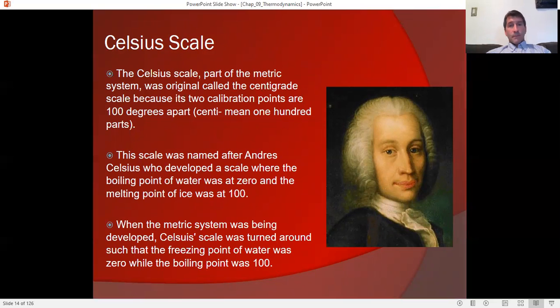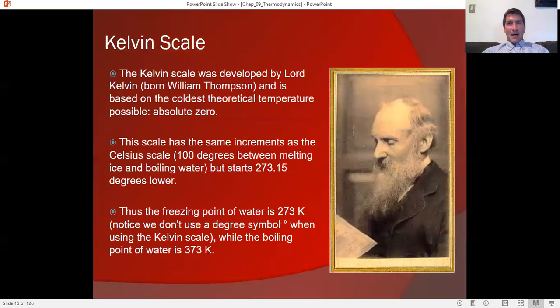The Celsius scale, sometimes called the centigrade scale, was named after Andres Celsius, who actually came up with a very strange scale. He set 100 to be the freezing point of water and zero to be the boiling point. So his scale was backwards. Of course, when they developed the metric system, they switched it around. So although Celsius gets credit for coming up with the scale, his scale was a little backwards.